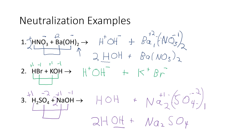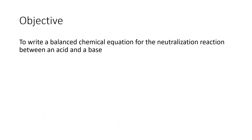We have two sodiums on the right but only one on the left, so we put a coefficient of 2 in front of sodium hydroxide. That generates two hydroxides on the left, so we put a 2 in front of HOH on the right. That gives two hydrogens on the right, and on the reactant side we also have two hydrogens — the equation is balanced. Our goal was to write balanced chemical equations for acid-base neutralization reactions: acids and bases act as ionic compounds that swap partners, products need one positive and one negative ion, and you use charge balance for subscripts and coefficients to balance the equation.